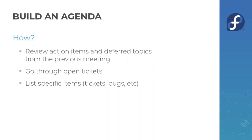How do you build the agenda? A good way is to review the action items and deferred topics from the previous meeting — that's the old business category, following up on things that were supposed to be done or coming back to topics you had to put off. You can also go through the team's open tickets. Some teams like FESCo actively tag issues for meetings, while for the Fedora Council it's more about what's still open that has made progress or needs attention.